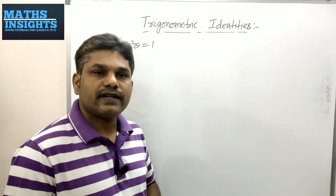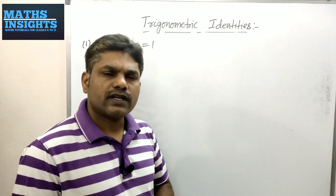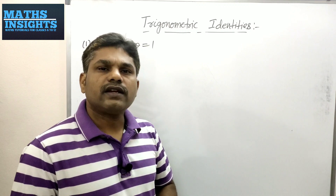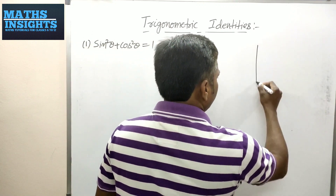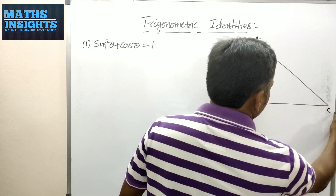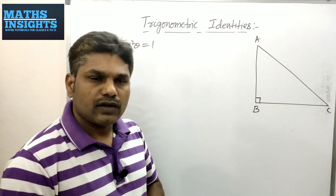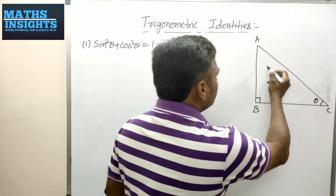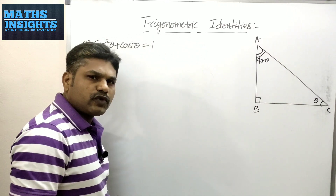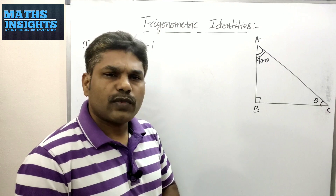Now I will prove these identities one by one. The first identity is sin²θ + cos²θ = 1. To prove this identity, I will take a right-angle triangle — let it be triangle ABC whose angle at B is 90°. I am taking theta at A, which means the remaining angle at C will be 90° − θ. Since ratios are defined in a right-angle triangle only, I will apply Pythagoras theorem.